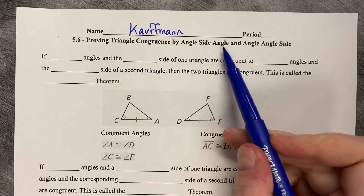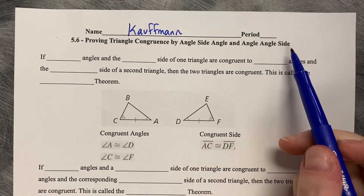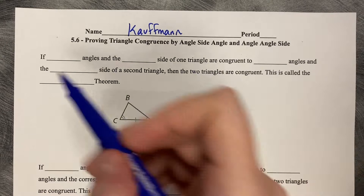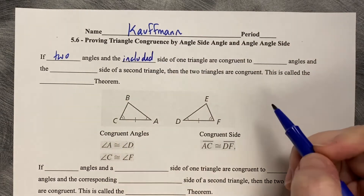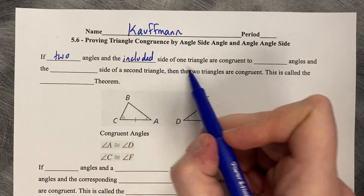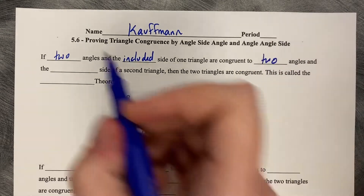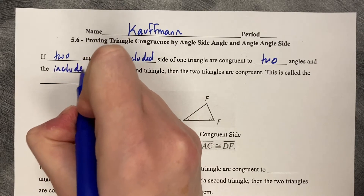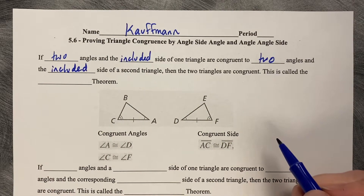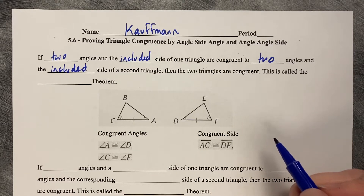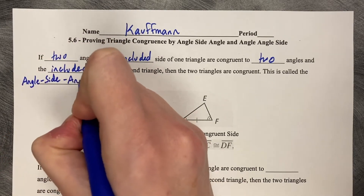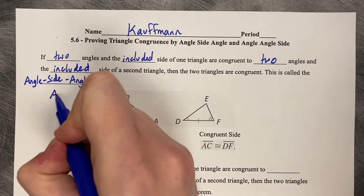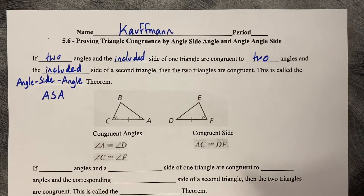Proving triangle congruence by angle-side-angle and angle-angle-side. First, we'll start with angle-side-angle. If two angles and the included — and that means between — the included side of one triangle are congruent to two angles and the included side of a second triangle, then the two triangles are congruent. This is called the angle-side-angle theorem, shorthand ASA, standing for angle-side-angle.